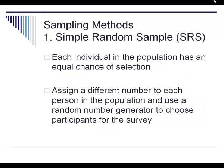Here are the four sampling methods that are good ways to conduct a sample. Simple random sample means that everyone in your population is given a random number and then you generate enough numbers to be part of your survey. We see this a lot in jury duty, where social security numbers are used to generate who gets picked — that's a simple random sample.